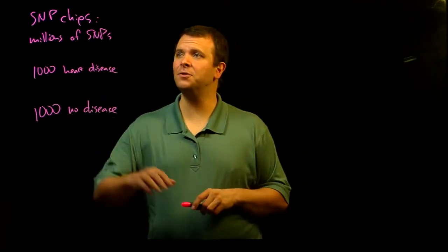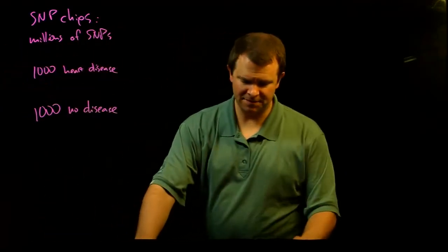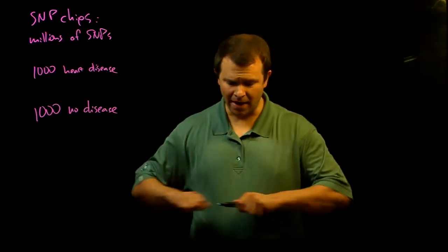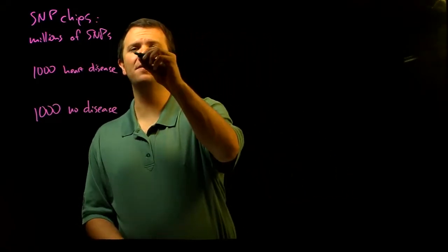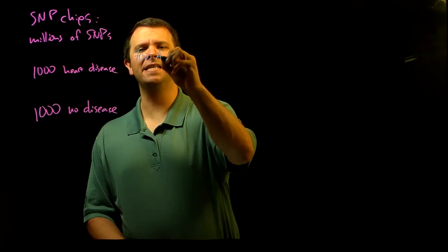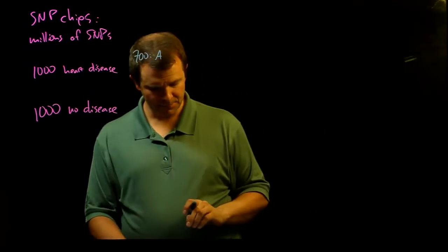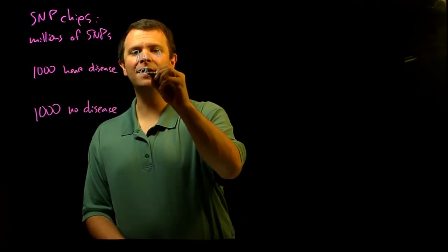Let's say we looked at all of these millions of SNPs and found one where 700 of the people with heart disease have an A and the rest have a C.